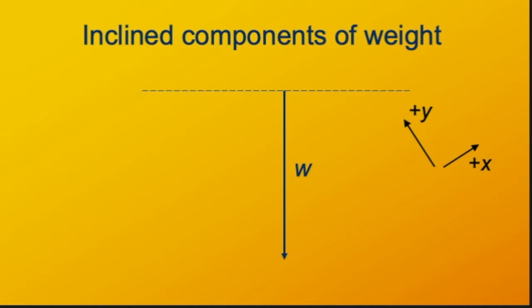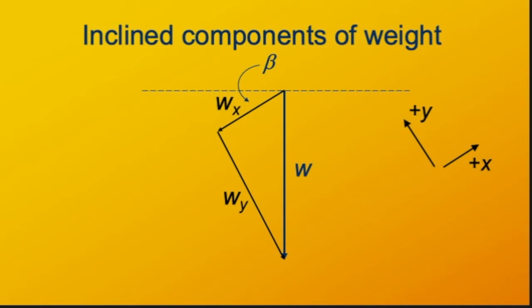Let's look at the weight first. It's the most complex force in this coordinate system because we have to worry about both its x and y components. I've drawn the x and y directions so we remember what they are. The x component of the weight is a bit downhill — we'll call that w sub x — and the y component is also downhill but perpendicular to the surface. I've drawn a dashed line to represent the horizontal direction. The incline is at angle beta to the horizontal, so the angle between horizontal and the x component is beta. The weight, its x component, and its y component form a right triangle.